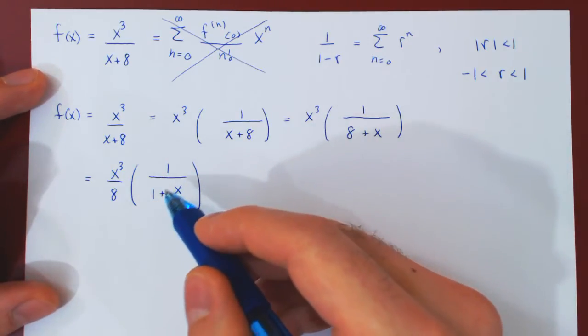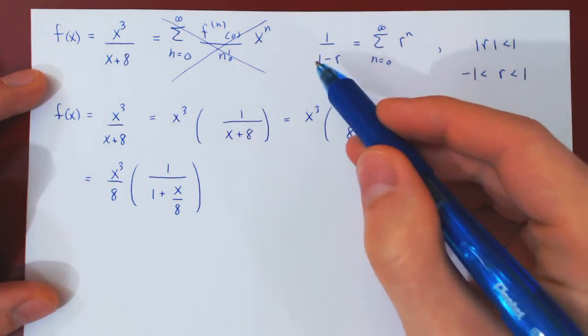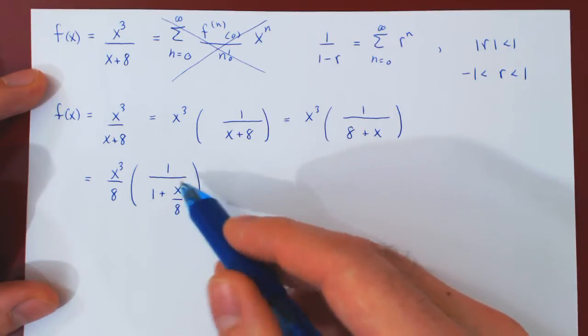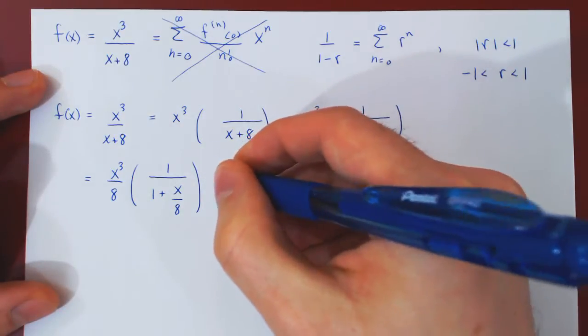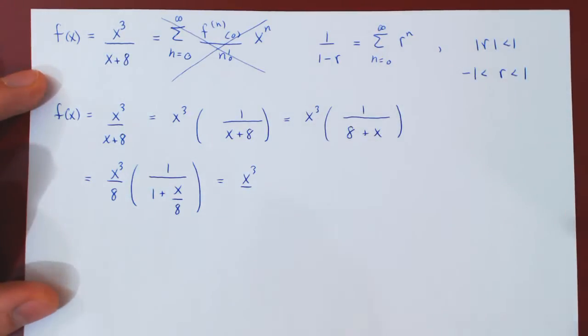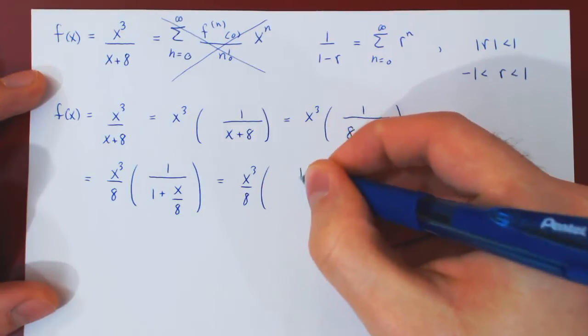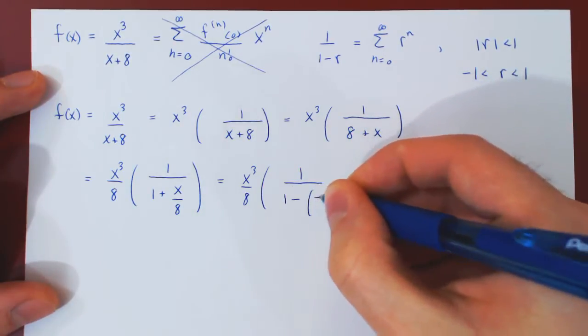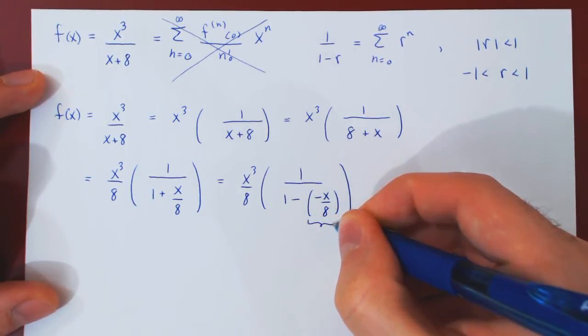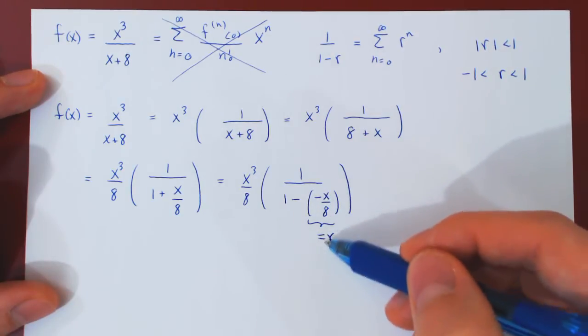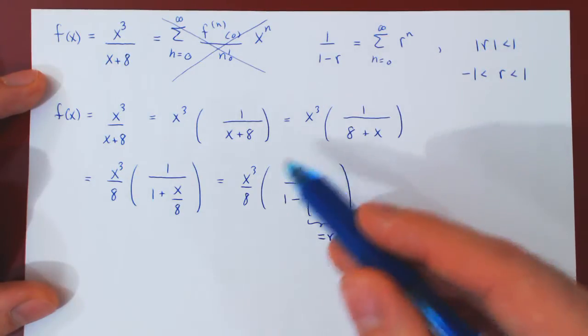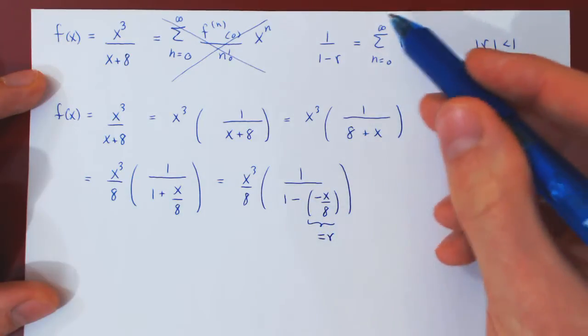So now we're almost there. What we now have is 1 over 1 plus the variable. What we need is 1 over 1 minus the variable. This is easily done, we can simply write 1 minus the negative of x over 8. And now we've found our r.